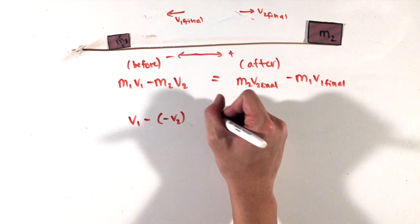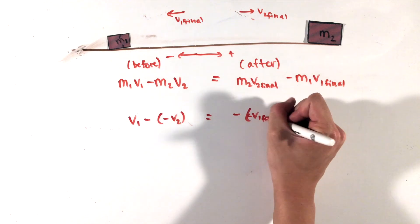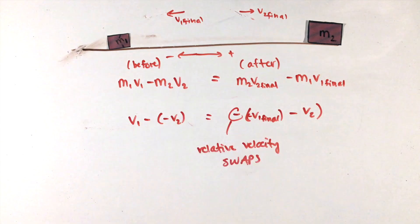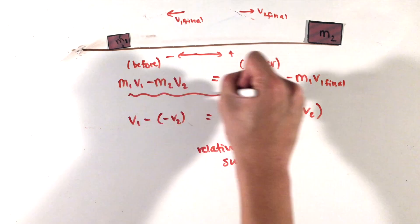though the flip version will work just as well. Making sure to consider the direction of the velocity vectors and calling positive to be the right again, we can call the relative velocity before to be v1 minus negative v2. And that must equal the negative of negative v1 minus v2 from our assumed final directions.